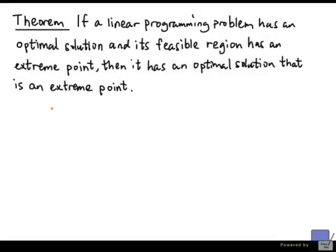We're going to sketch the proof of the following theorem. If a linear programming problem has an optimal solution, and its feasible region has an extreme point, then it has an optimal solution that is an extreme point.